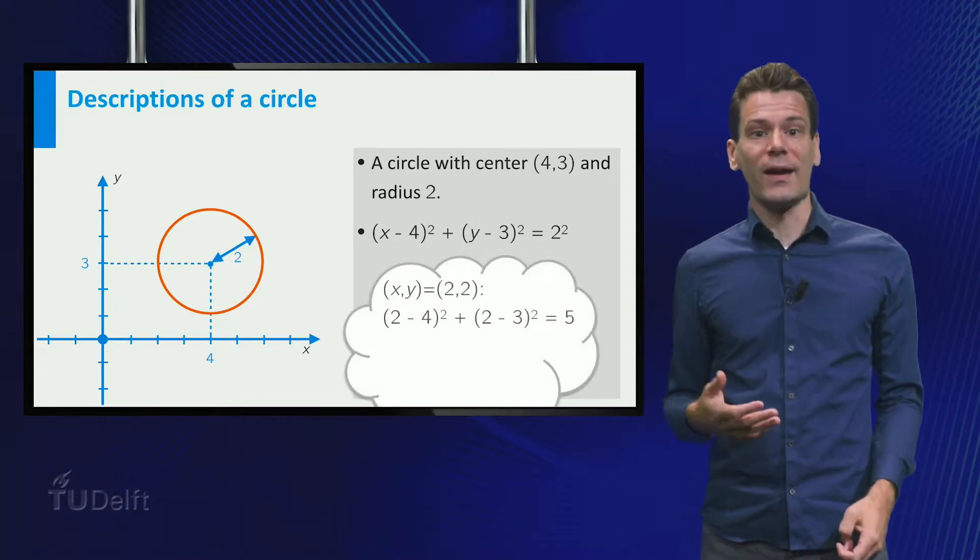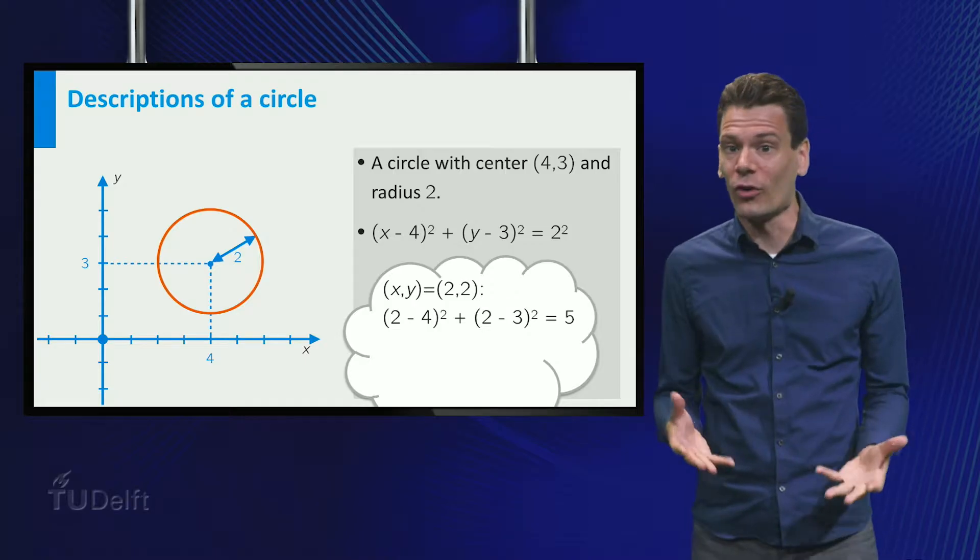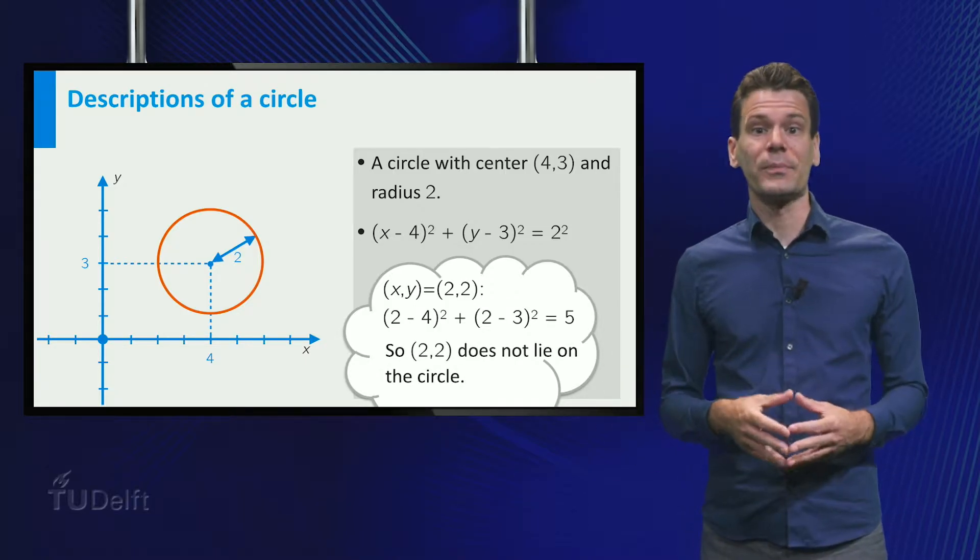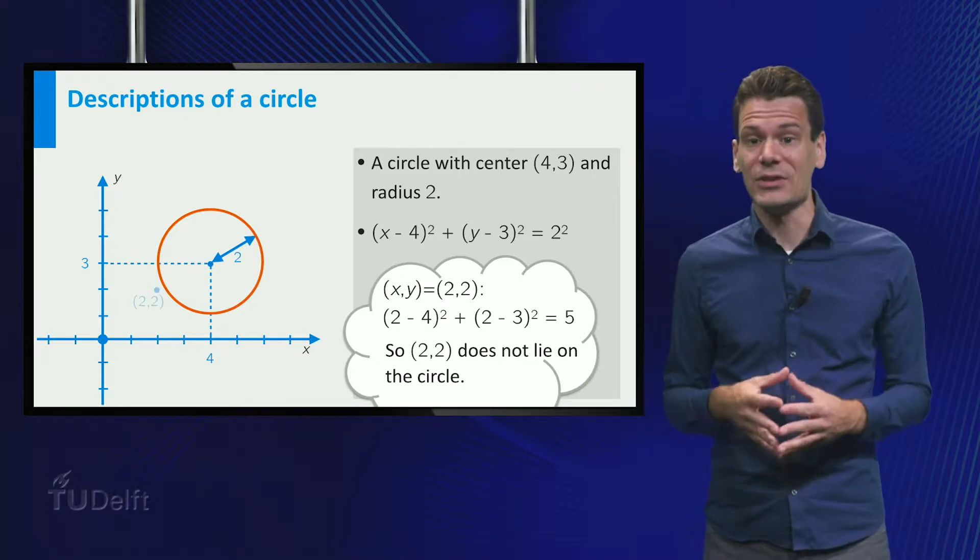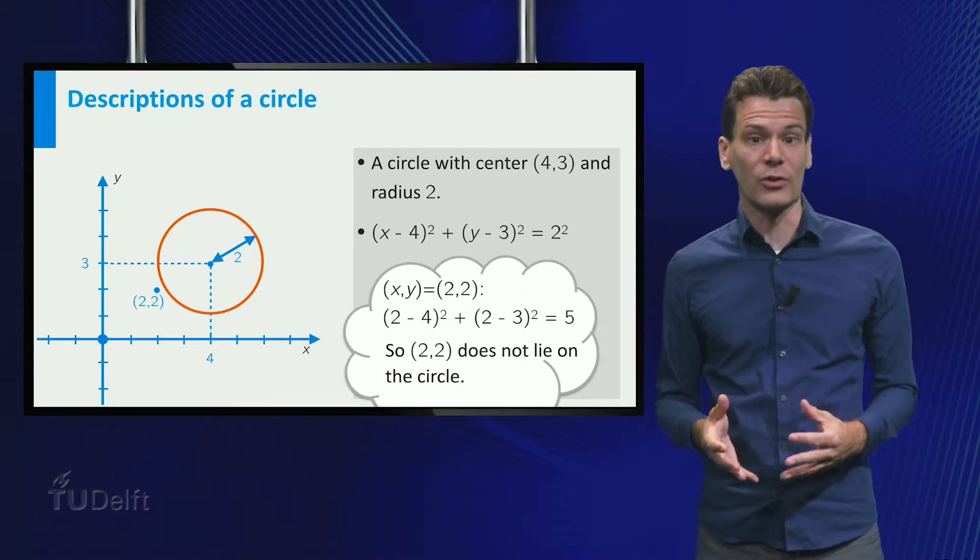we see that (2 - 4)² + (2 - 3)² adds up to 5. This is not 4, so we know that the point does not lie on the circle. You can check graphically that this is indeed the case. We call such a formula an implicit description of the circle.